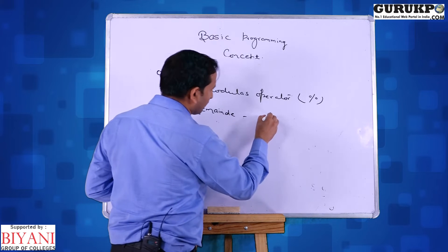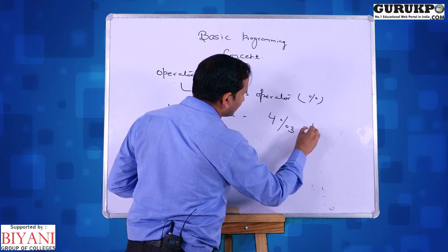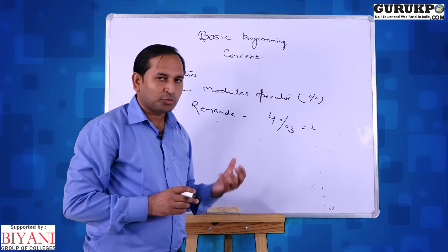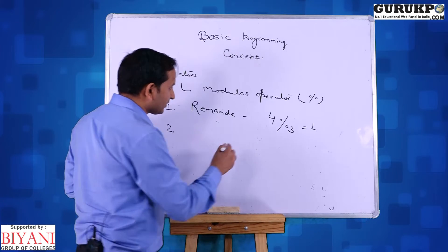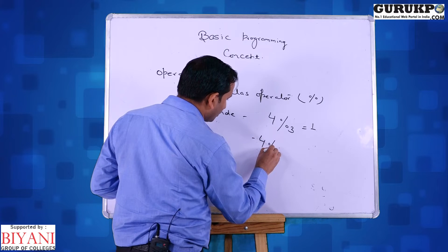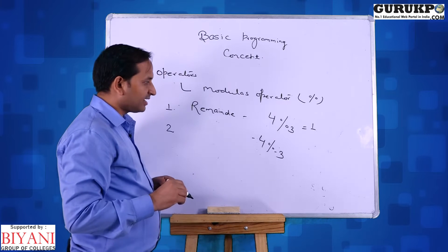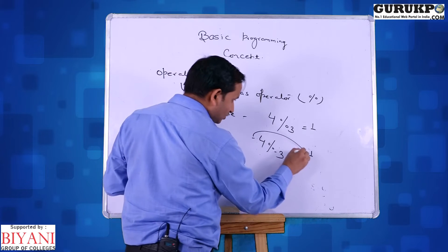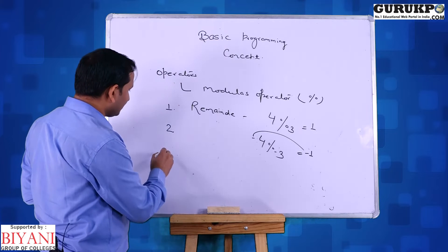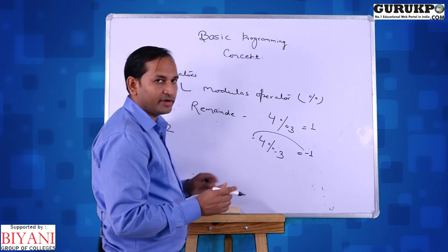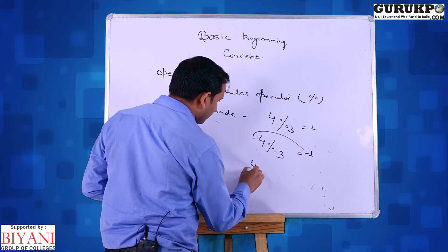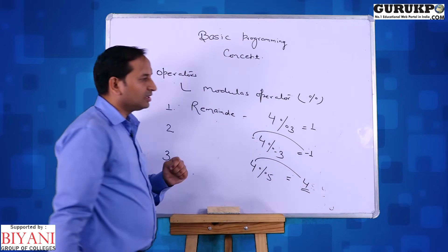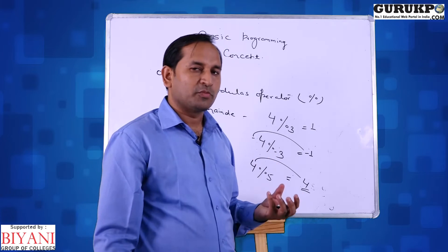The second property: the output sign always depends on the numerator sign. Suppose minus 4 modulus minus 3 — first we compute 4 mod 3, which gives 1, and since the numerator sign is minus, the output will be minus 1. The third property: if the numerator value is less than the denominator value, for example 4 modulus 5, then the output will be the numerator — so 4 will be the output.